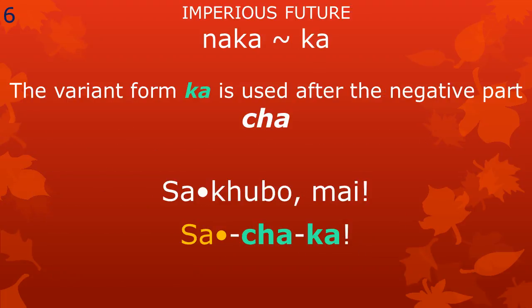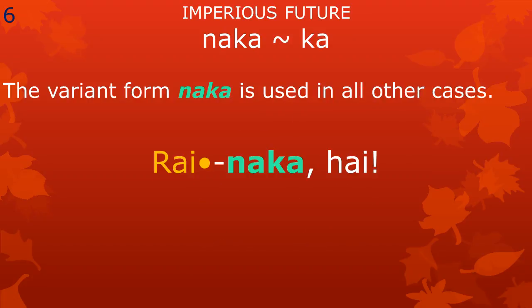The meaningful part indicating imperious future has two variant forms: naka and ka. The variant form ka is used after the negative meaningful part ja. For example, when someone says sa kubo mai? And you reply, sa chaka. The variant form naka is used in all other cases, as when we say ra'i naka hai?